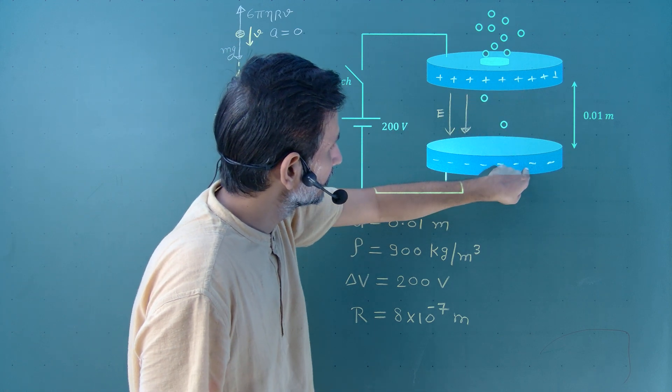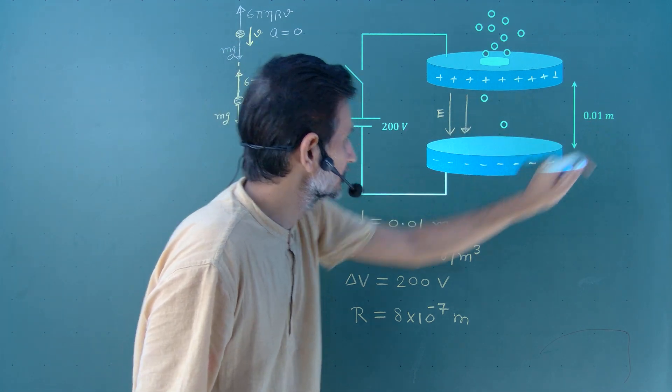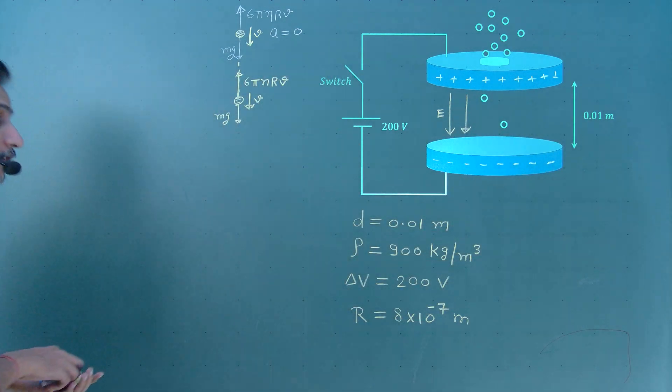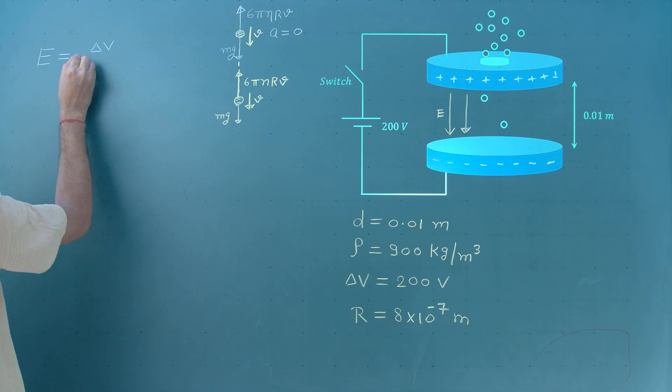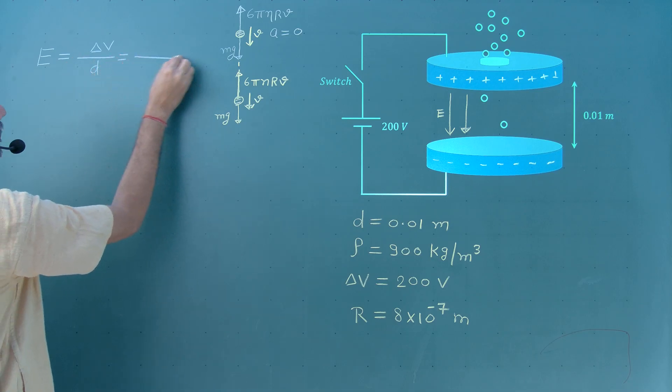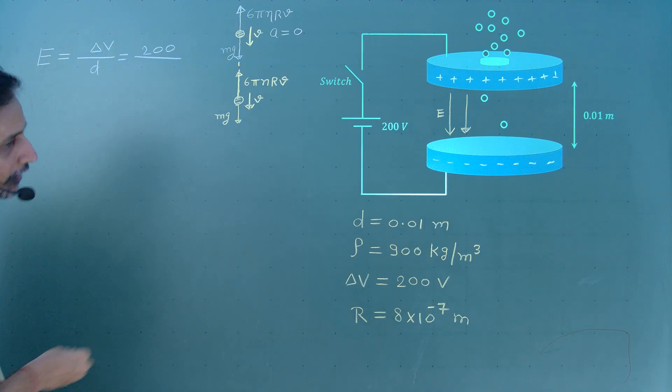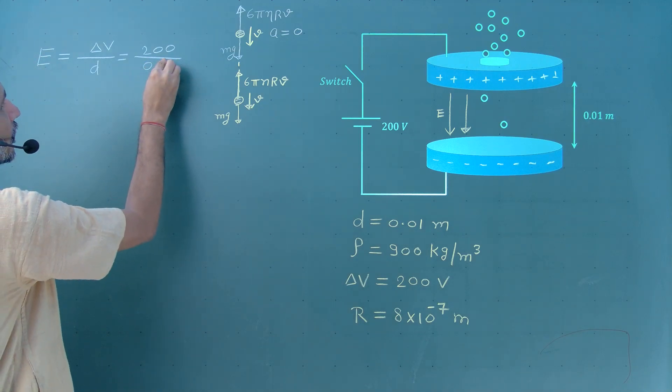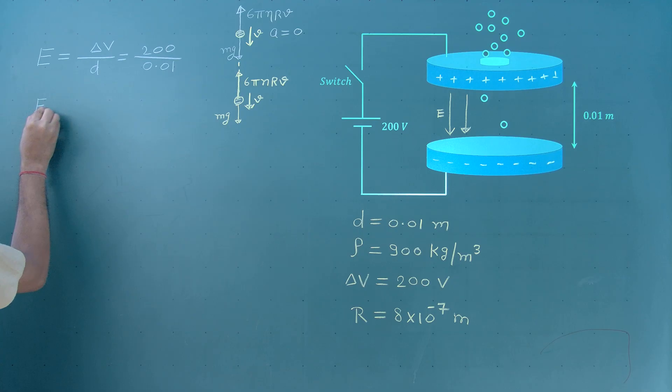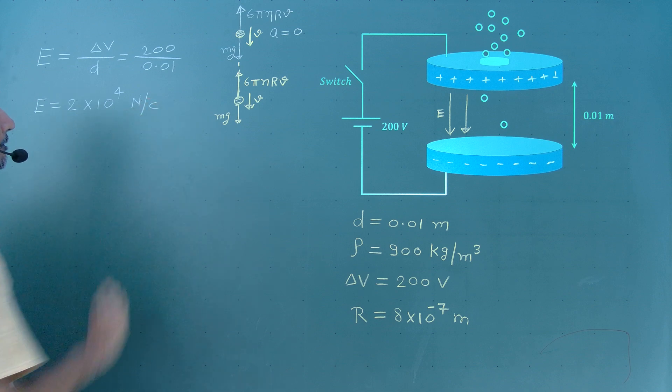Let us call the magnitude of this electric field E. We know the potential difference between these two plates and the distance between these two plates, so we can calculate the value of electric field. Electric field equal to delta V divided by D. What is delta V? 200. And what is D? 0.01. So, the magnitude of electric field is 2 into 10 to the power 4 Newton per coulomb.